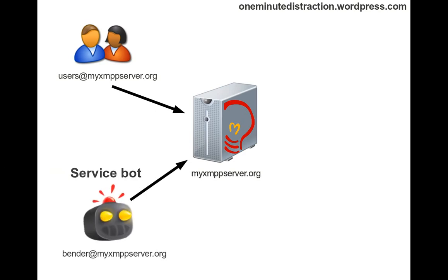One of the easiest ways is to use something called a service bot. A service bot is basically a program that logs into the XMPP server using a JID or Jabber ID. For the user to use this service bot, the user must first know the JID of this service, and then the user will add it to his or her roster. Once that has been added and the service bot has accepted the invitation, the users can send requests to this service bot for service.